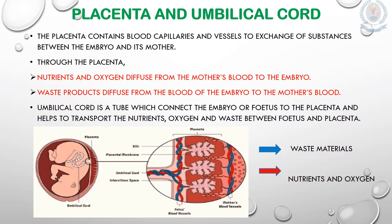Now let's learn about another important topic: the placenta and umbilical cord. After an embryo is implanted in the uterus, a placenta will develop from the embryo. The placenta contains blood capillaries and vessels for the exchange of substances between the embryo and its mother. Nutrients and oxygen can diffuse from the mother's blood to the embryo or fetus via the placenta.